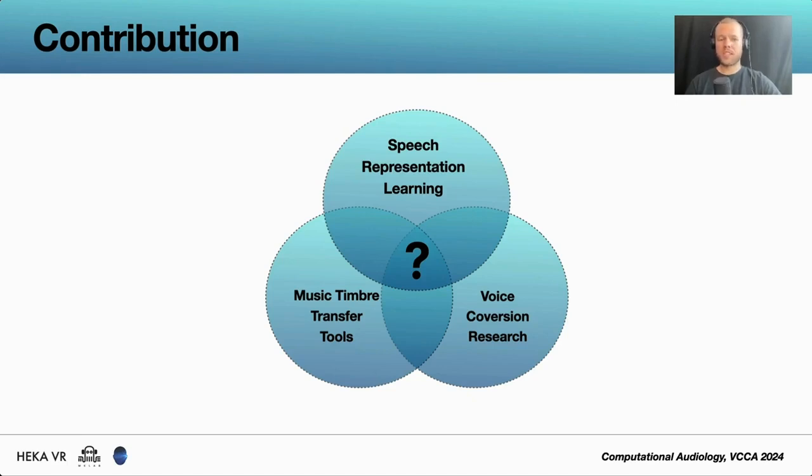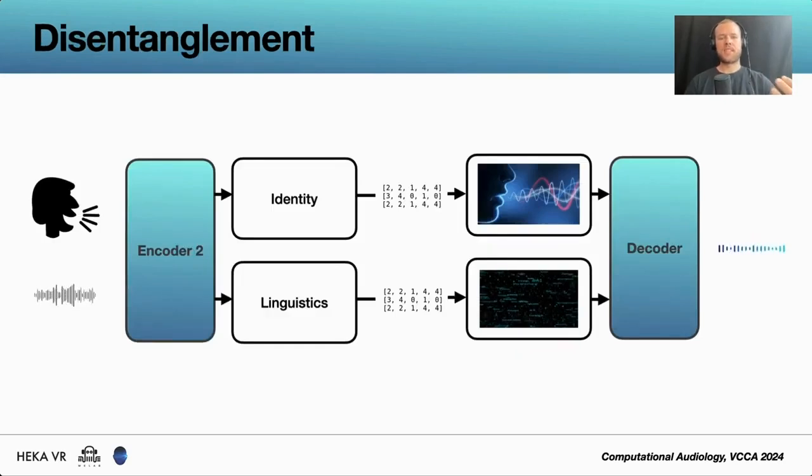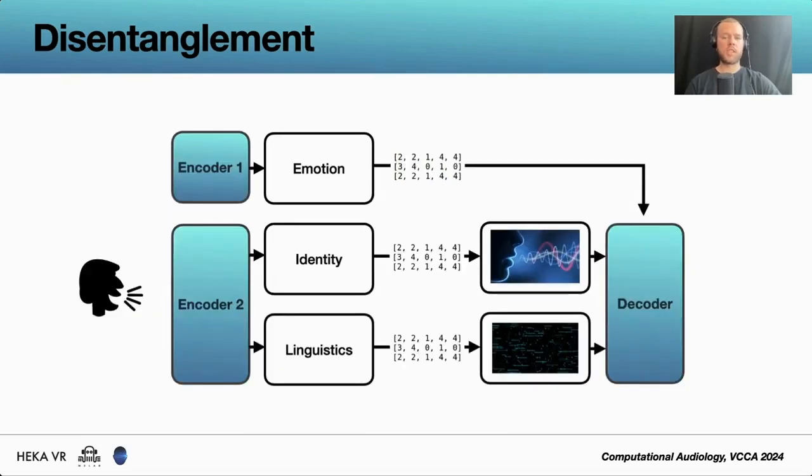And what is important in this case is this entanglement. Disentanglement is the idea that we can take specific information and disentangle it in order to recombine it and substitute it with the same features from different speakers. Such information could, as an example, be embeddings related to linguistics, speaker identity, or even emotion and prosody, as we see here, which then can be interchanged with the same embeddings from specific target speakers to perform the conversion.